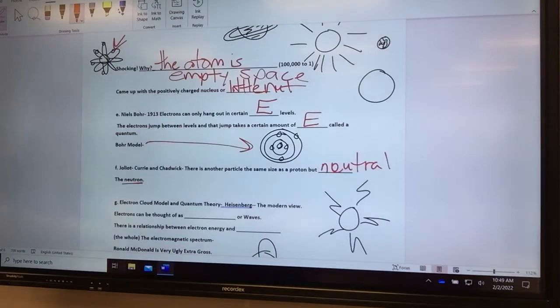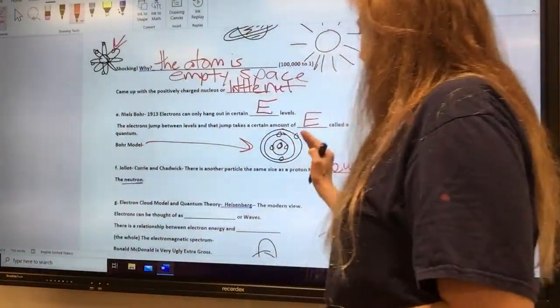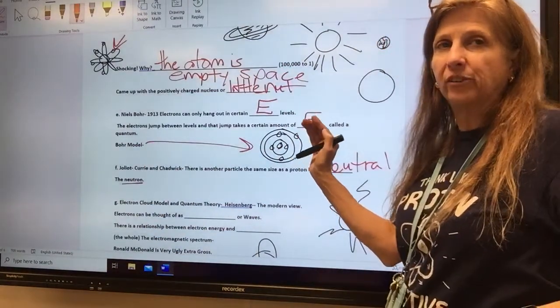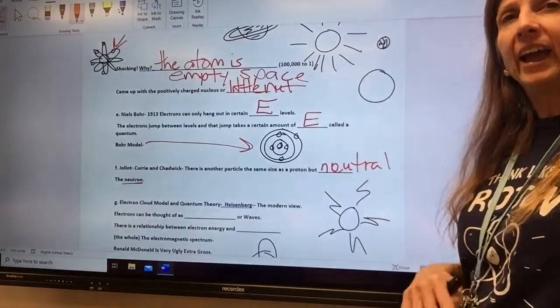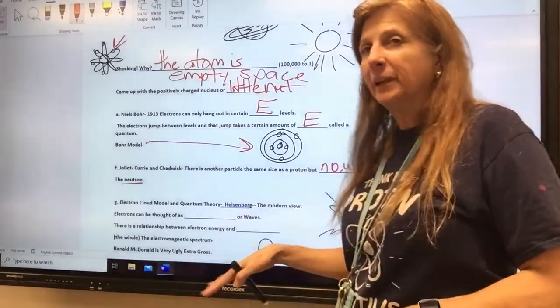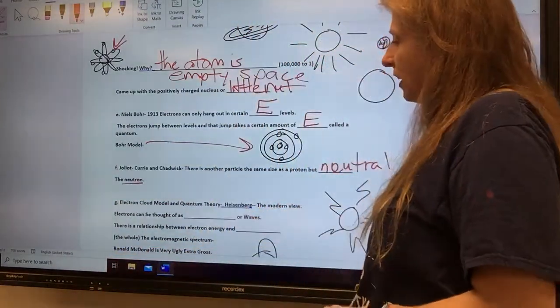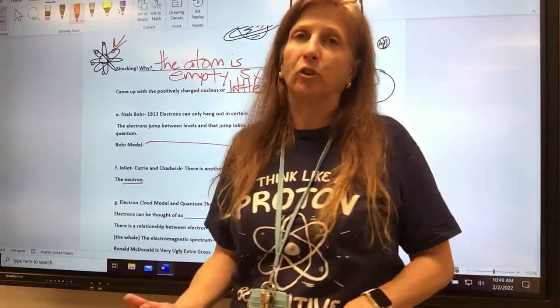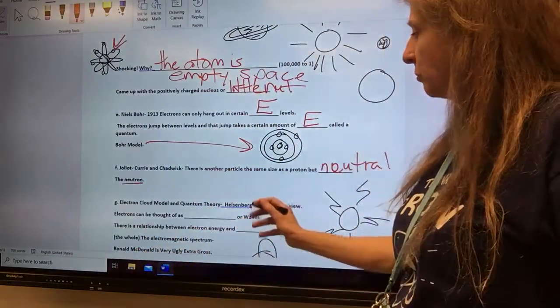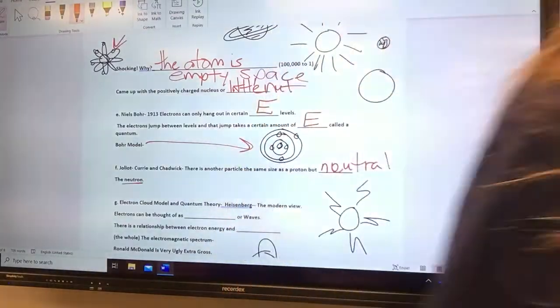The next thing that came along was they figured out that those electrons don't hang out in nice, perfect, little, pretty circles like they did in the Bohr model. Instead, they hang out in clouds where there is a certain probability that they will be. That's called the electron cloud model, or quantum theory. There's a lot of scientists who helped contribute to this, but one of the main ones was Heisenberg.